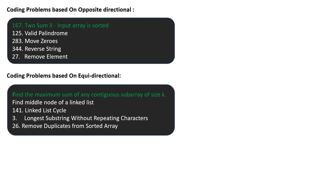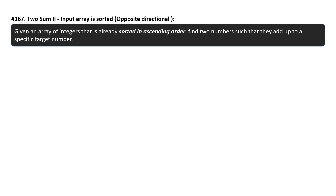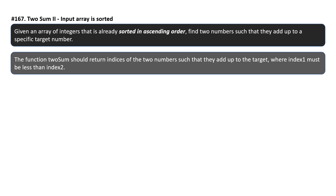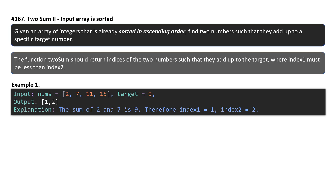First we are going to solve the two-sum problem. Given an array of integers already sorted in ascending order, find two numbers such that they add up to a specific target number. The function two-sum should return indices of two numbers such that they add up to the target, where index 1 must be less than index 2. For example, with input [2, 7, 11, 15] and target 9, the output is [1, 2] because 2 plus 7 equals 9, and they are at index 1 and index 2. Note they are following one-based indexing.